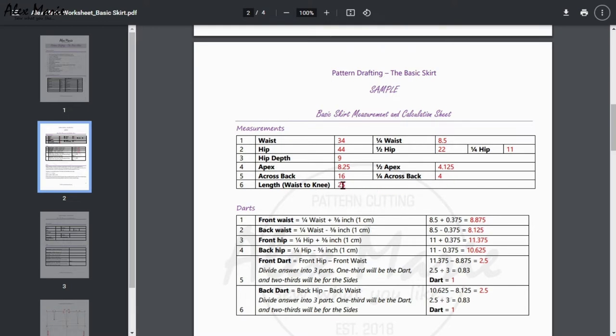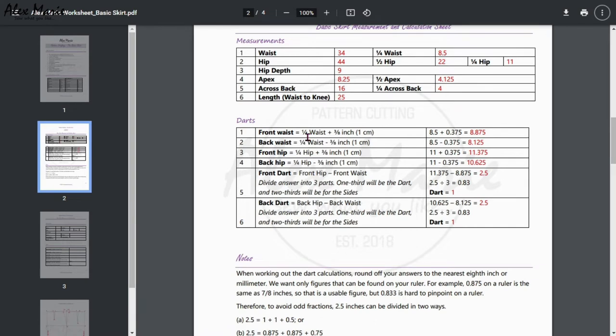Then you have some quick calculations. Front waist is a quarter of the waist, so you've already done your quarter of the waist which is up here. You're going to see where it is and then you need to add three-eighths of an inch for your answer. Back waist is minus three-eighths of an inch. Front hip is hip plus three-eighths, back hip is minus three-eighths.